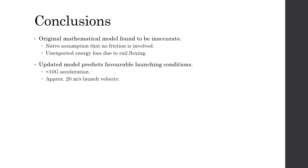In conclusion, the original mathematical model was found to be inaccurate. There was a naive assumption that no friction was involved, but there was also an unexpected energy loss due to the rail flexing.